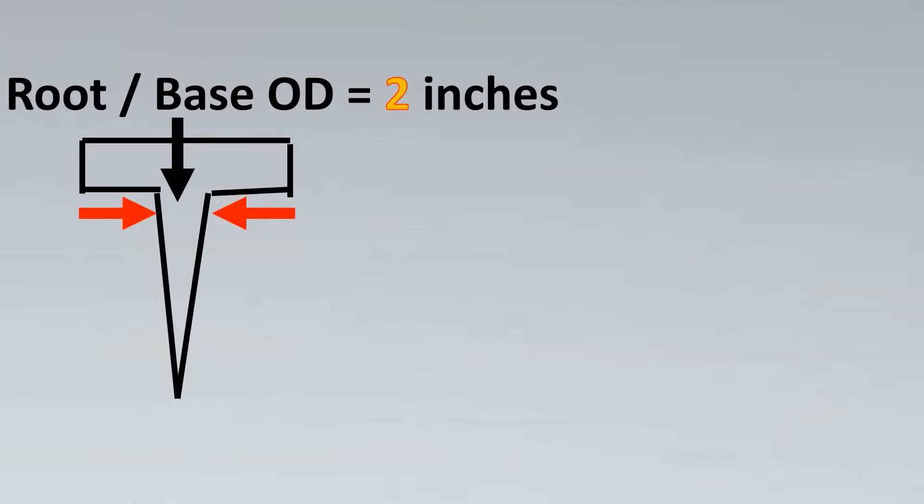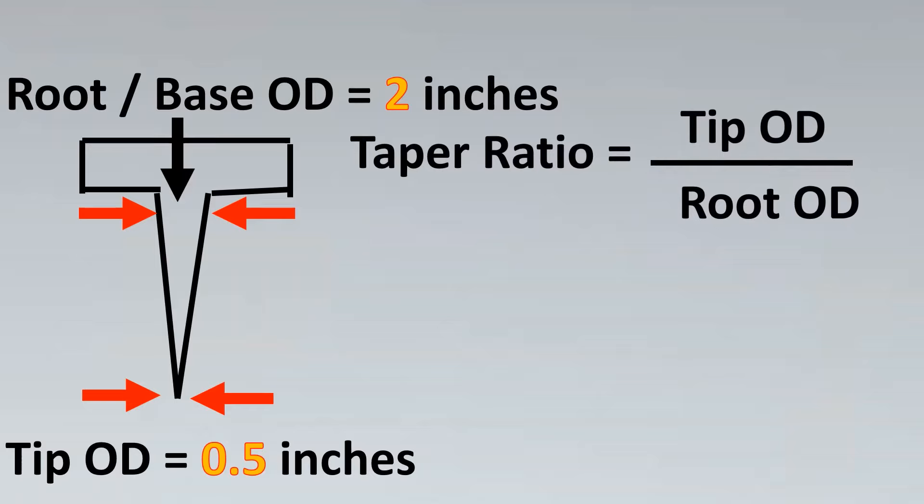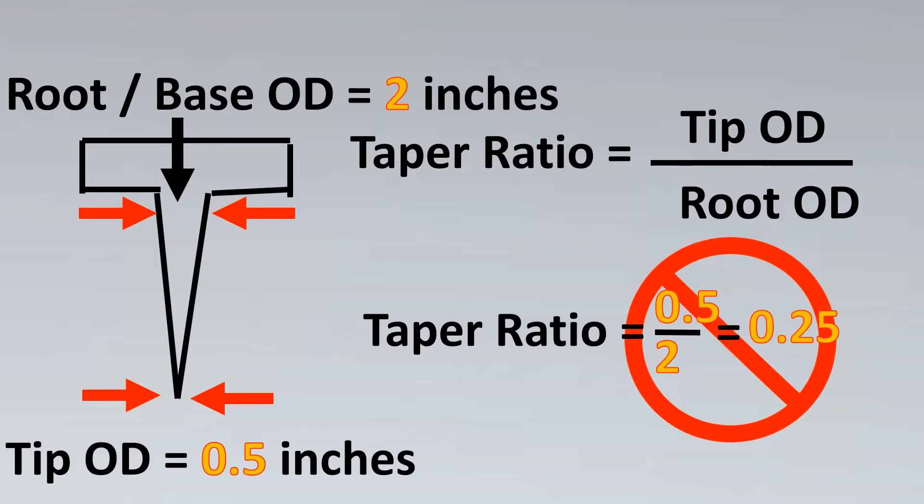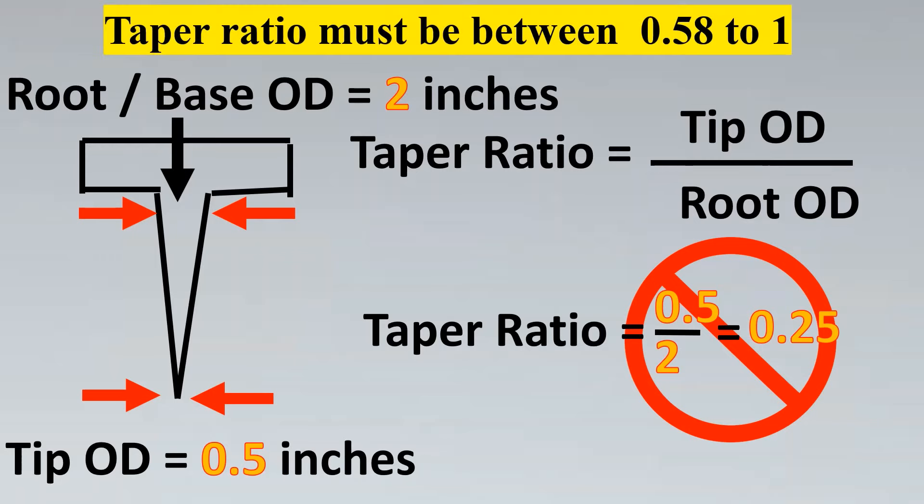This is how a thermowell will look now because we have violated the lower length of taper ratio. Here, let's imagine the root base OD is two inches, but the tip OD will make it as 0.5 inches. So it's a very small tip. Here, what happens is first, let's look into the standard that the standard had said that the taper ratio has to be between 0.58 to one. So now let's calculate and see. So the taper ratio is going to be this 0.5 plus this two and we'll take the ratio of this and this comes out to be 0.25.